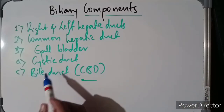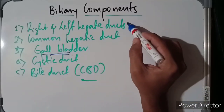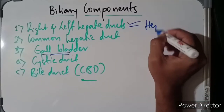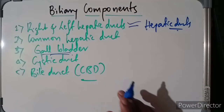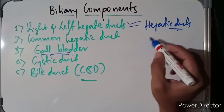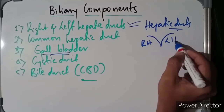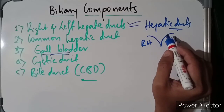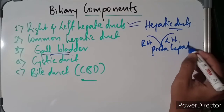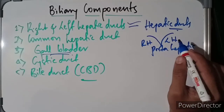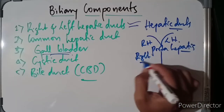Now we will start discussing about the hepatic ducts. There are right and left hepatic ducts that come from the right and left lobes of the liver. We have the right hepatic duct and also the left hepatic duct, and they emerge through the porta hepatis. Then they unite near its right end to form the common hepatic duct.